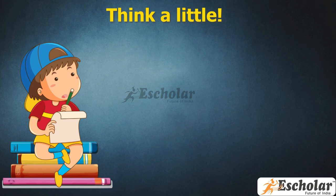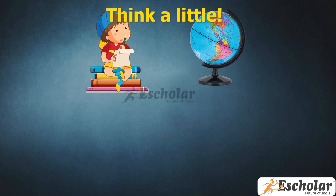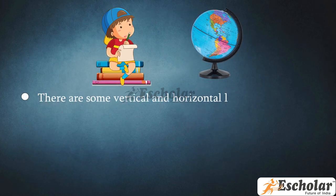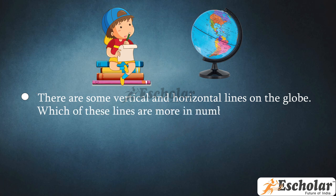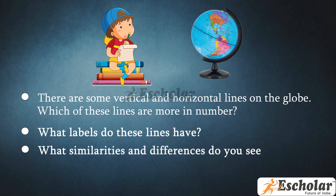Think a little — observe the globe. There are some vertical and horizontal lines on the globe. Which of these lines are more in number? What labels do these lines have? What similarities and differences do you see in the labels?